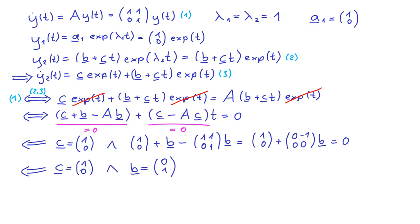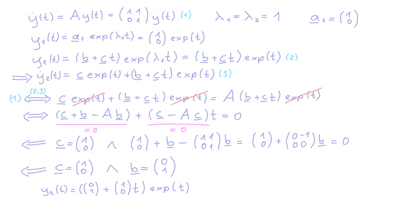With this c and b we now have a second solution to our differential equation. Let us now consider how these two solutions look. With the two linearly independent solutions that we have found, it is now easy to write down the general solution of the homogeneous linear differential equation.